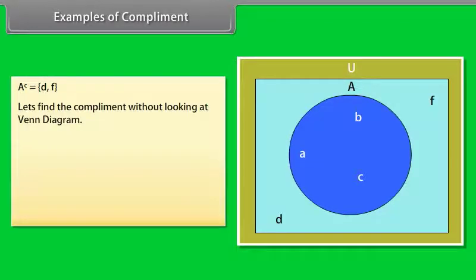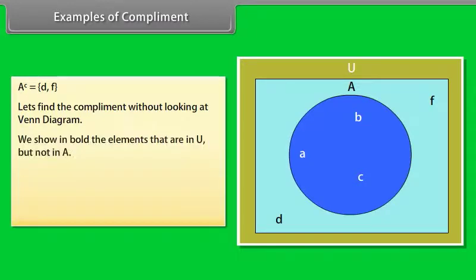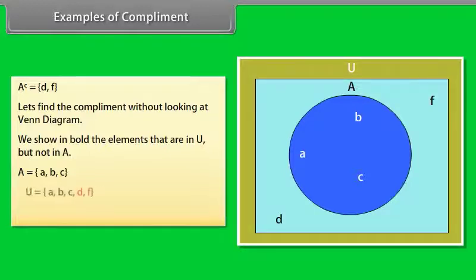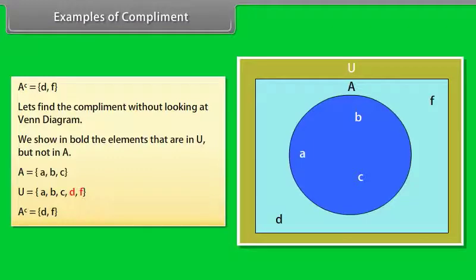Let's find the complement without looking at the Venn diagram. We show in bold the elements that are in U but not in A. A = {A, B, C}. U = {A, B, C, D, F}. So, complement of A = {D, F}.